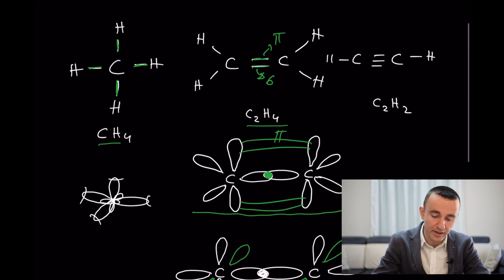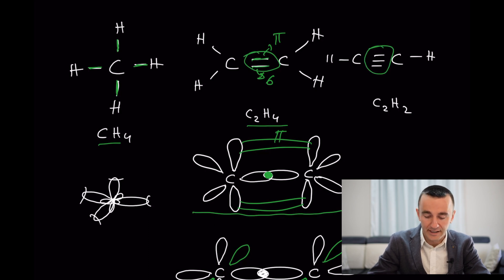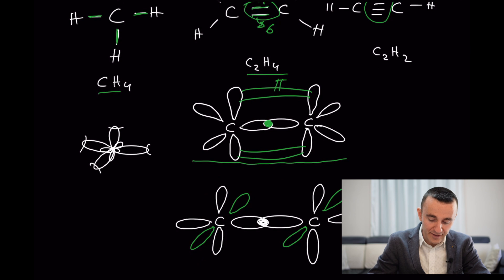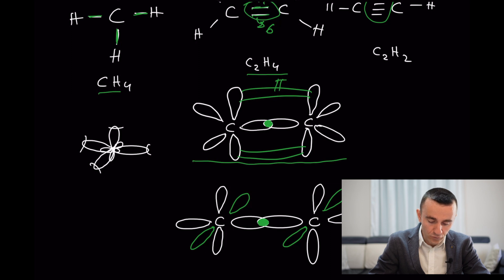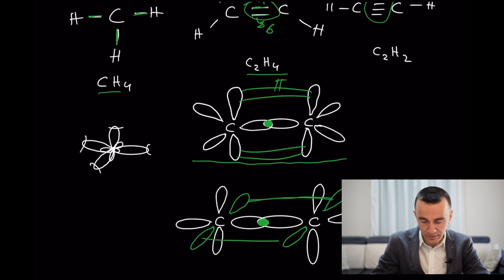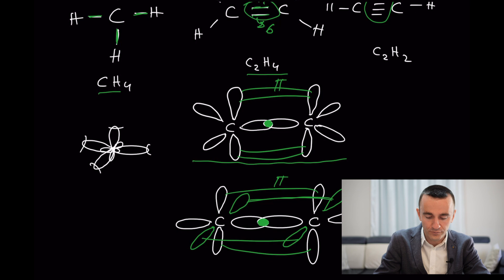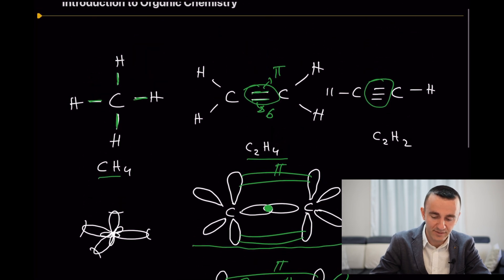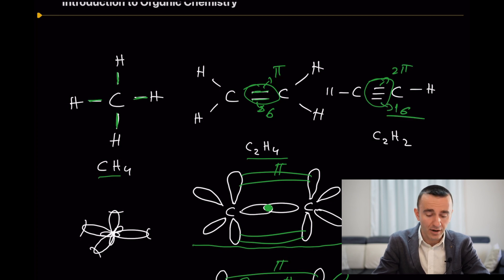Let's move to the triple bond. In this case there is only one sigma bond — it is not possible to create two sigma bonds, because they cannot be perpendicular with each other. So in a triple bond you have two pi bonds and one sigma bond.